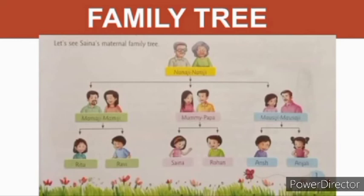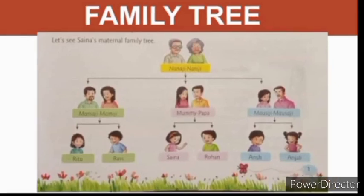The next generation comes — the children of Mama ji and Mammy ji are Ritu and Ravi. Children of Mammy papa, meaning Sanya's family, are Sanya and her brother Rohan. And Mousa ji and Mousi ji are having two children: Ansh and Anjali. So Ritu, Ravi, Sanya, Rohan, Ansh, and Anjali are all cousins.